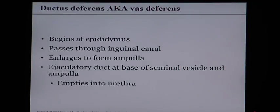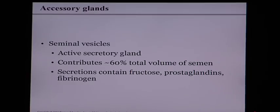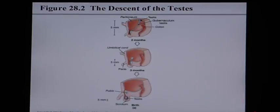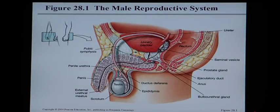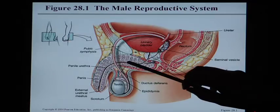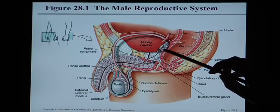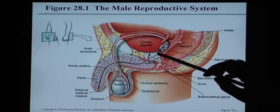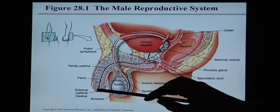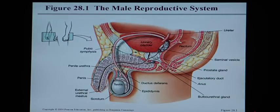The vas deferens begins at the epididymis and passes through the inguinal canal, enlarging to form the ampulla on the back of the bladder. The ejaculatory duct forms at the base where the seminal vesicle and the ampulla join together. Looking at the back of this anatomy, the vas deferens from each side enlarges to form an ampulla, and those two ampullae join with the seminal vesicle glands to form the ejaculatory duct, which runs right through the prostate and feeds into the urethra.